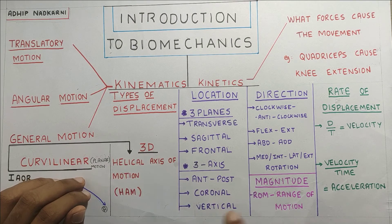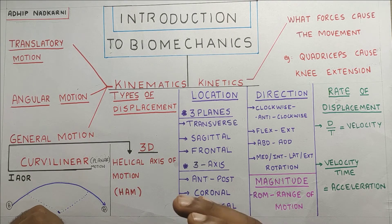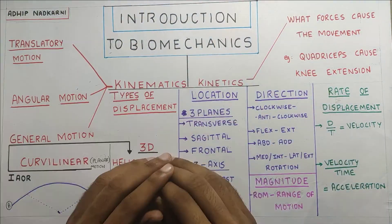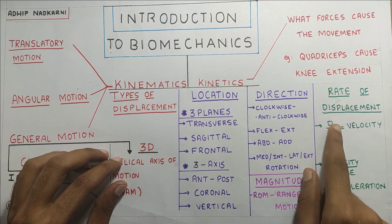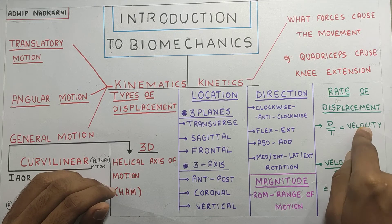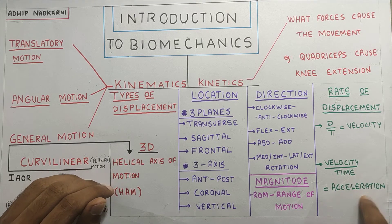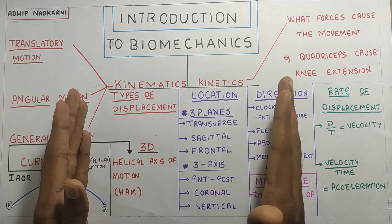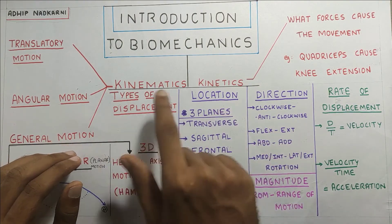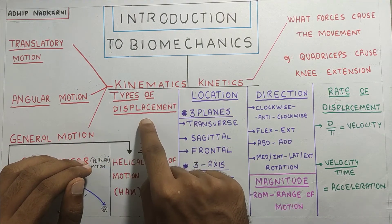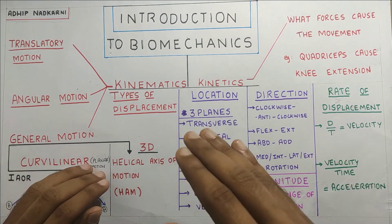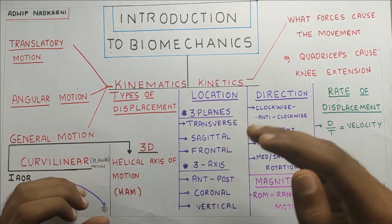Regarding the magnitude of movement, this is called the range of motion — how much range the joint covers. For a normal human being it can go up to 180 degrees. The rate of displacement is measured as displacement divided by time, also known as velocity, and velocity divided by time is acceleration — how much change happens in velocity in a given period of time. We have now covered all five components of kinematics: type of displacement, location, direction, magnitude, and rate of displacement.